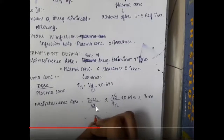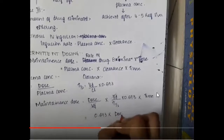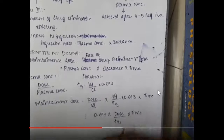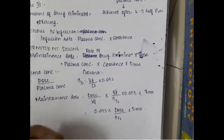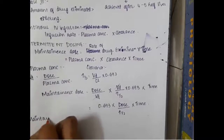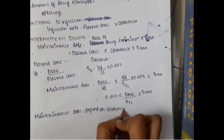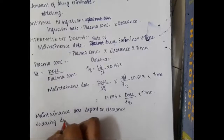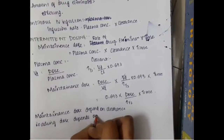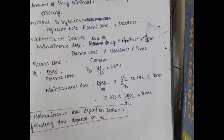Substituting into the maintenance dose formula, both volume of distribution terms cancel, giving: maintenance dose equals 0.693 multiplied by dose divided by half-life multiplied by time. Importantly, maintenance dose depends upon clearance and loading dose depends upon volume of distribution.